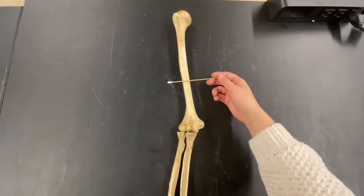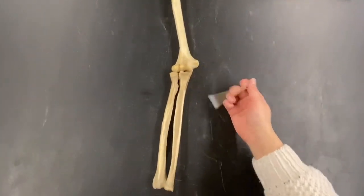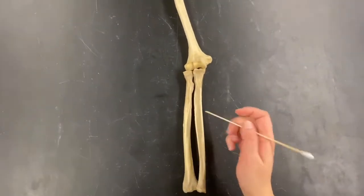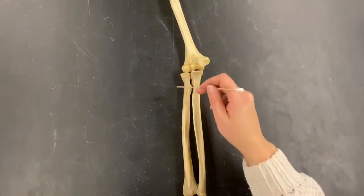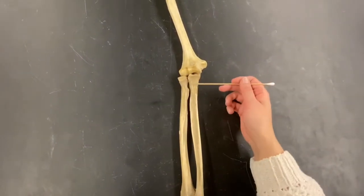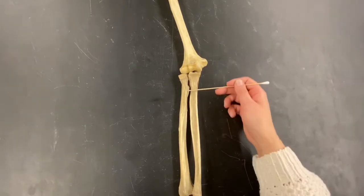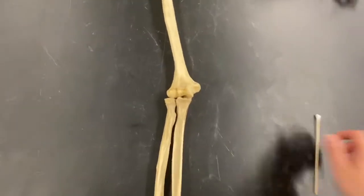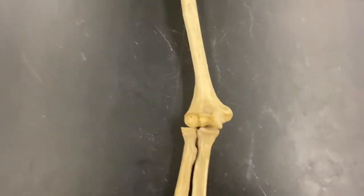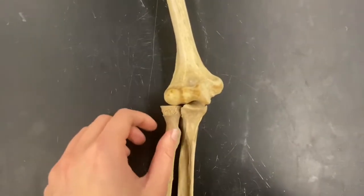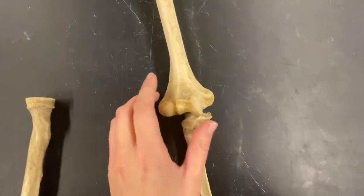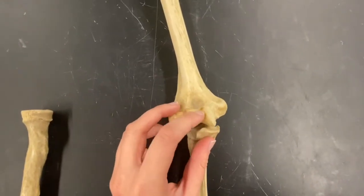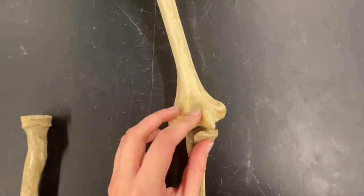This is your right humerus. Located laterally is your radius and medially is your ulna. I want to show you these articulated. I'm going to remove the radius — if you'll remember, this right here is your trochlea.